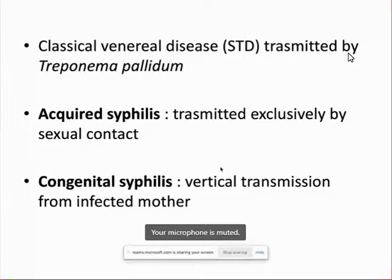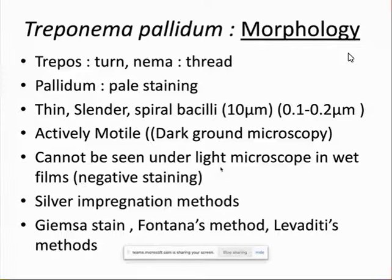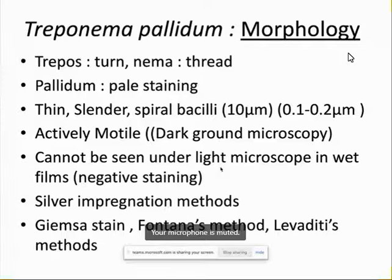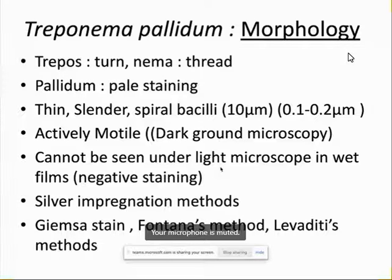Let us discuss the characteristic features of the causative agent of syphilis. Treponema pallidum is slightly atypical compared to other common bacteria. These are spiral-shaped bacteria — 'trepone' means turns and 'nema' means thread — meaning they have regular turning, very fine thread-like structures. They are very difficult to stain by routine stains, appearing very pale. They are thin, slender, spiral-shaped bacilli, relatively larger at around 10 micrometers in length.